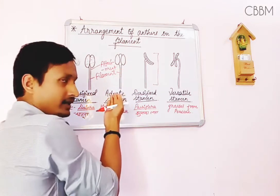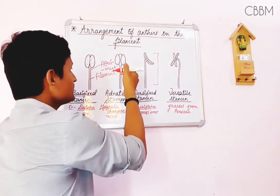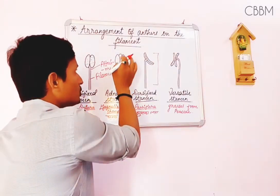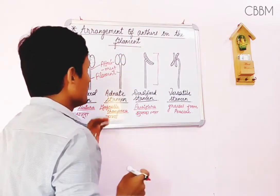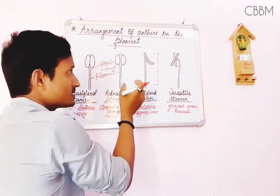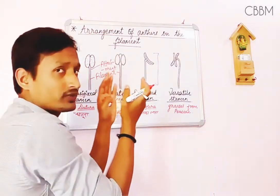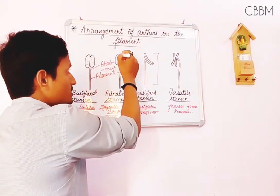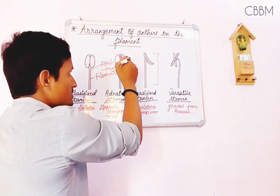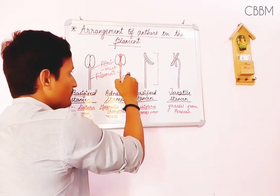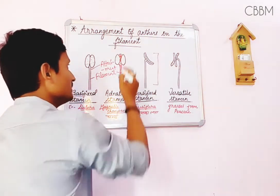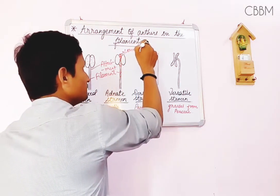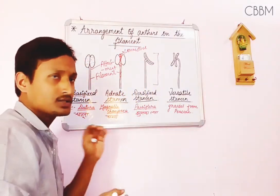The next type is adnate stamen. In this type, the filament is attached to the anther such that both lobes of the anther are connected with the filament. This attachment is of connective type — the filament runs along the entire length connecting both lobes — and hence this type is named adnate stamen.